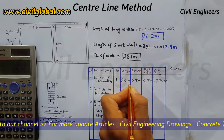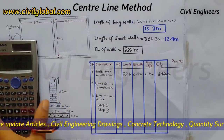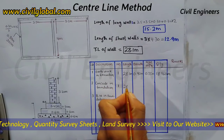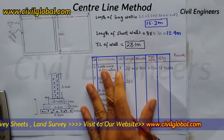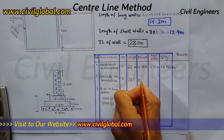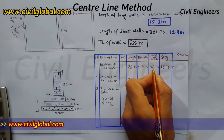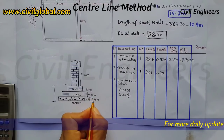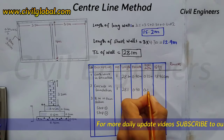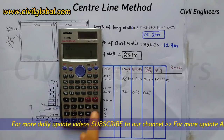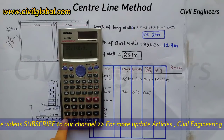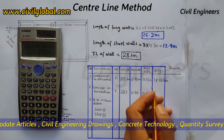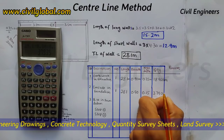For concrete and foundation: 1 number, length is 28.1 meters, breadth is 0.90 meters, and depth is 0.15 meters. The quantity is 28.1 × 0.90 × 0.15 equals 3.79 cubic meters (CUM).